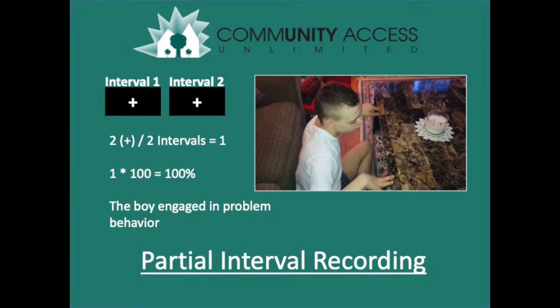The child hit the table. Yes — in both one-minute intervals, we add up the positives and get two. Two positives divided by two intervals equals one, times 100 gives us 100%. The child engaged in this problem behavior approximately 100% of the time using partial interval recording.